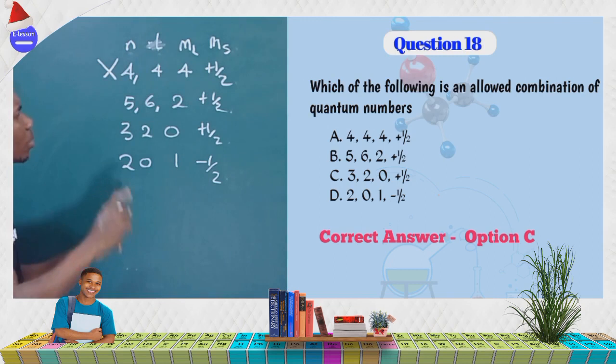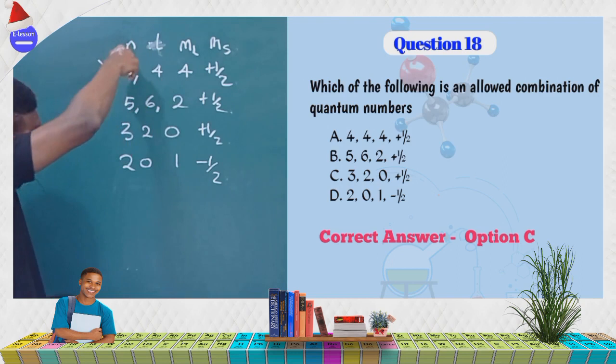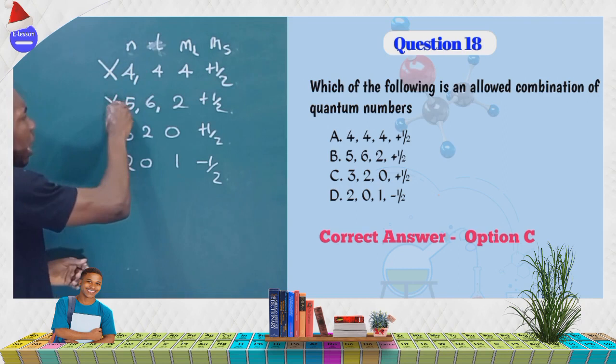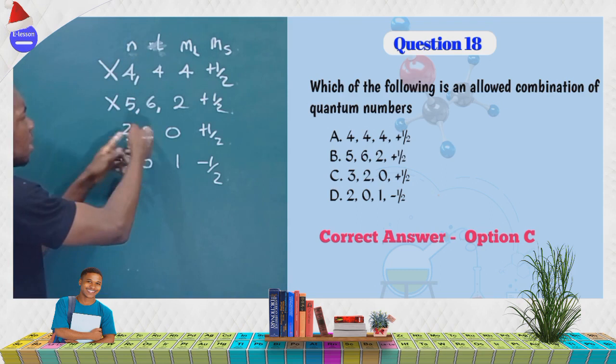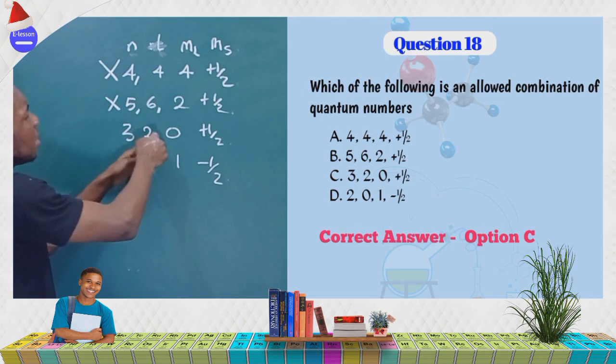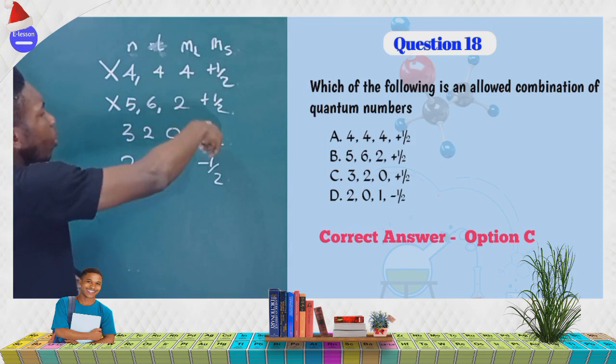Secondly, on no account must L be greater than n; L must be less than n. So option B is also eliminated. Now let's look at option C: n is 3, L is 2 — this is less than n, which is correct. ML is 0, which is less than or equal to L=2, and the spin is +½. This option looks correct.